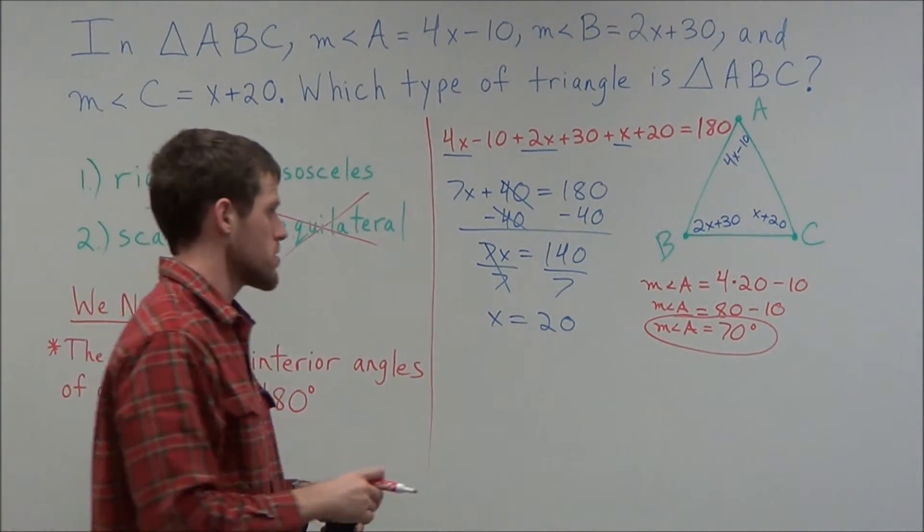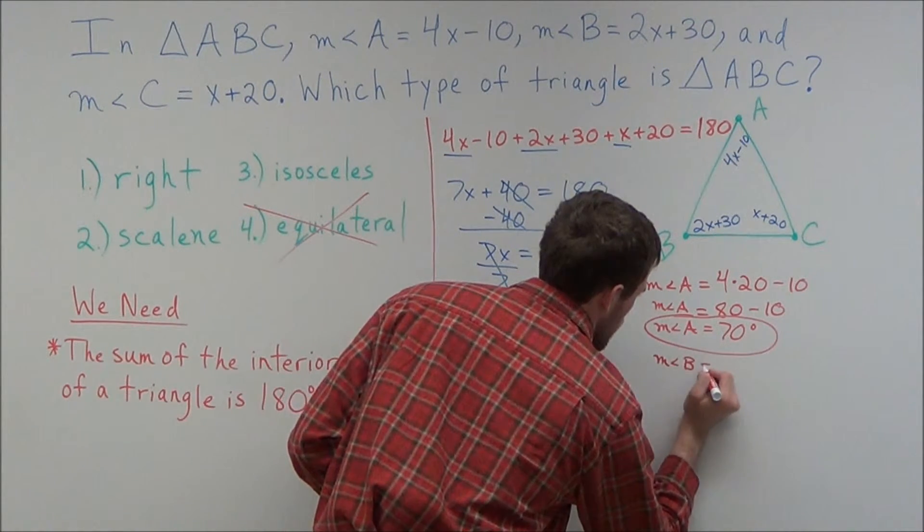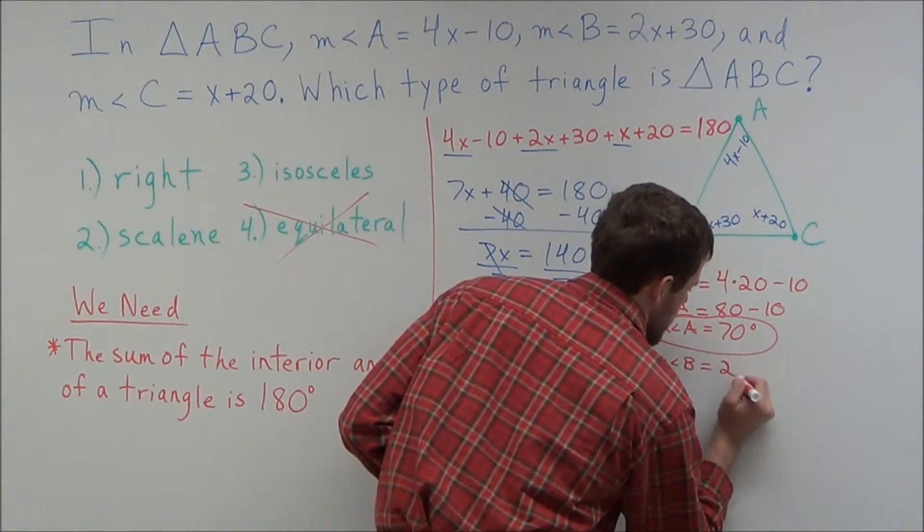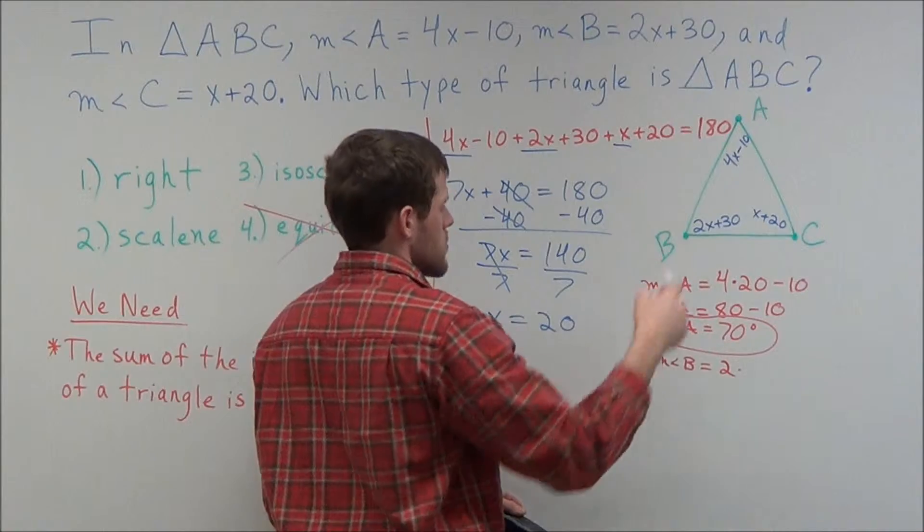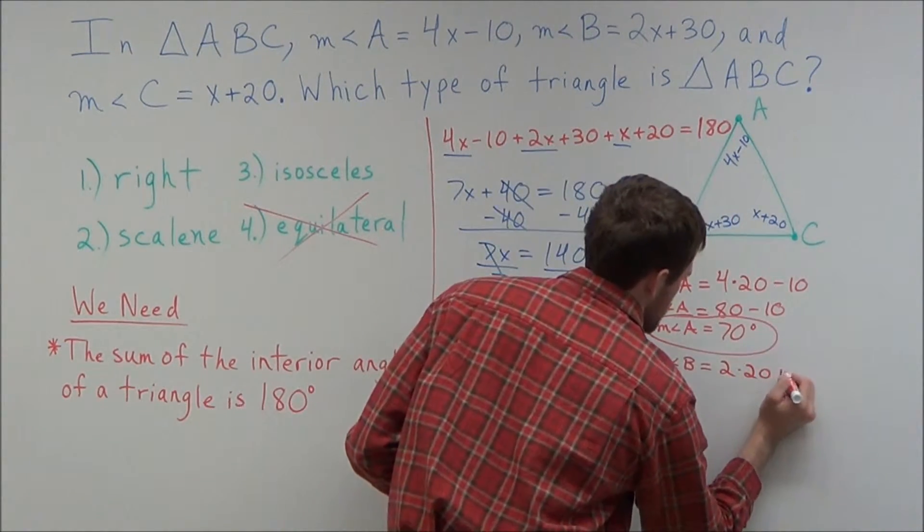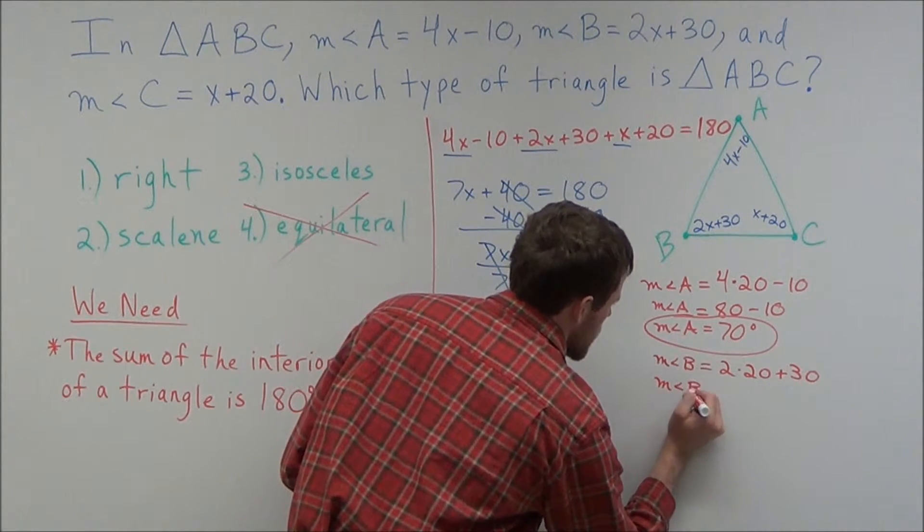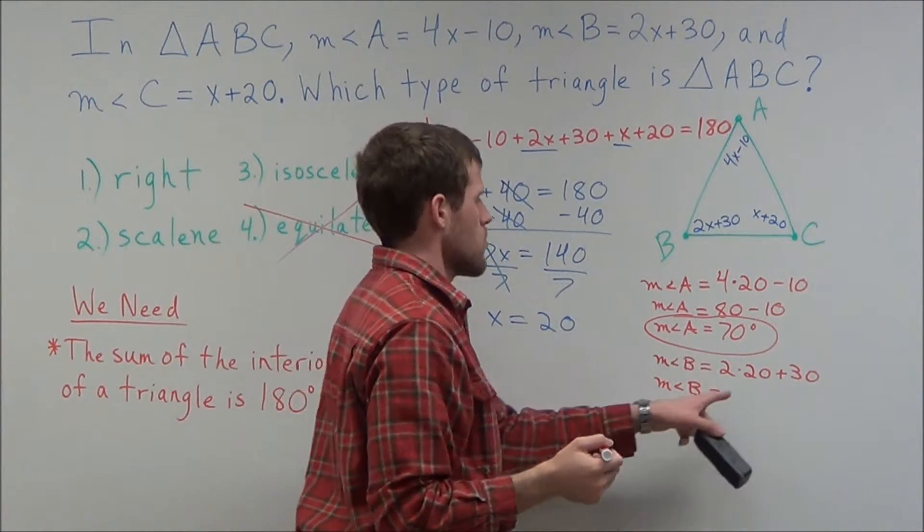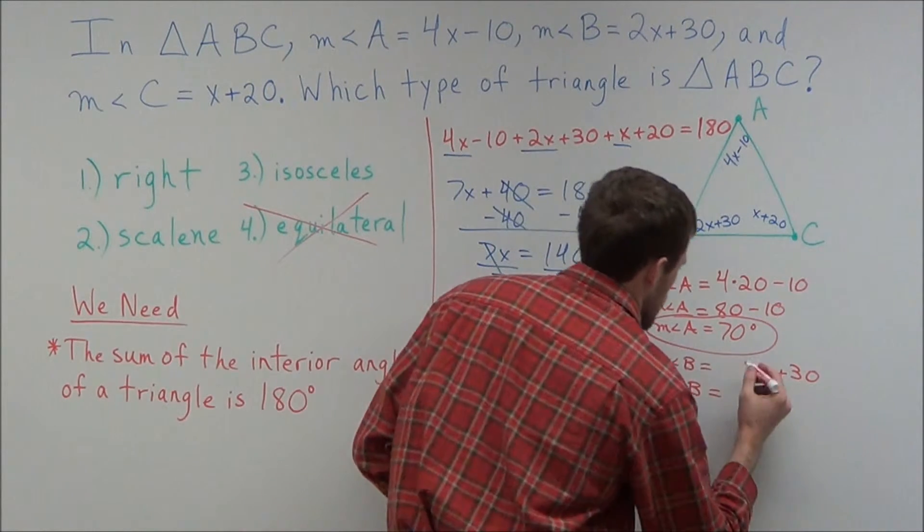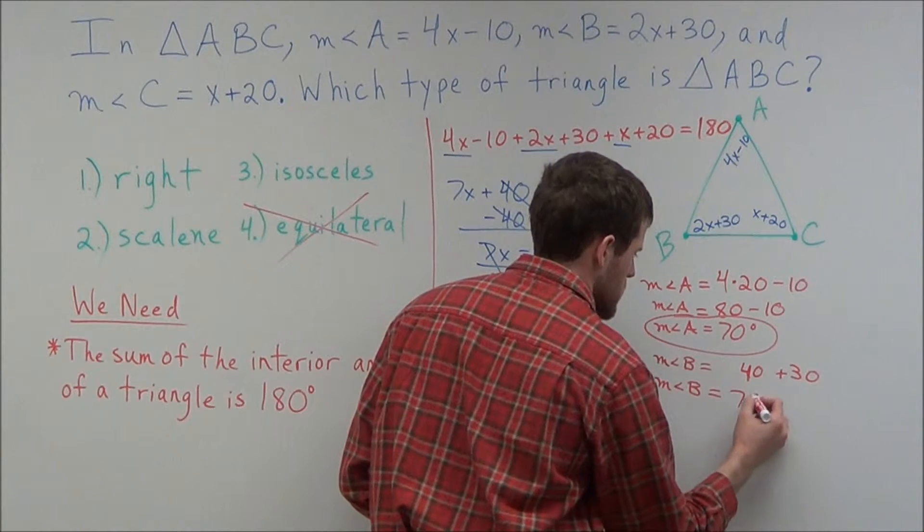So right away we've gotten rid of one answer choice. And now for the measure of angle B, we know that B is equal to 2x plus 30. So we have 2 times, and now x equals 20, that's what we just found, plus 30. So now the measure of angle B equals, well we have 2 times 20 is 40. We'll just do that all here. And 40 plus 30 is 70. So the measure of angle B is 70 degrees.